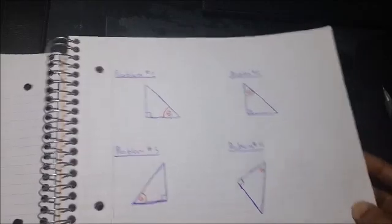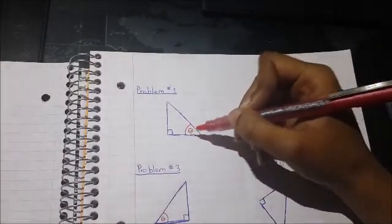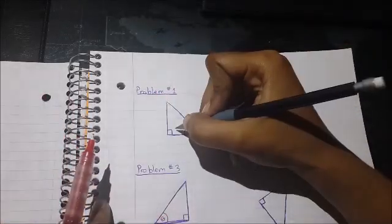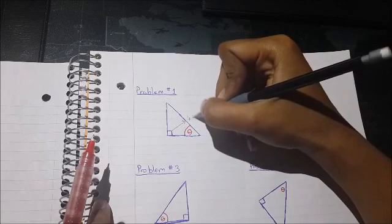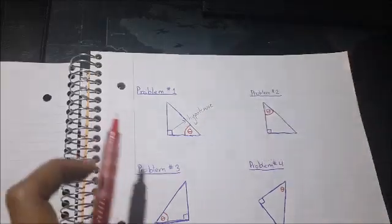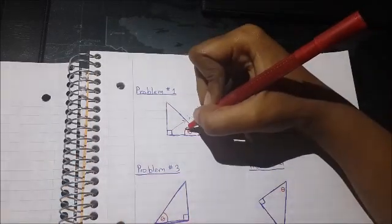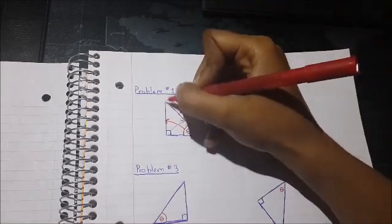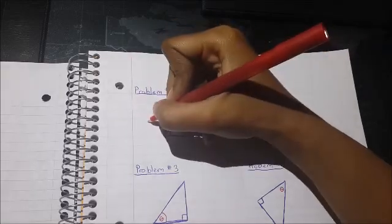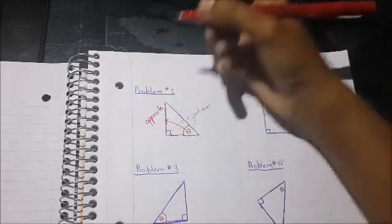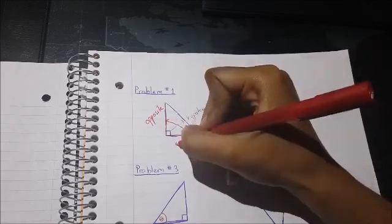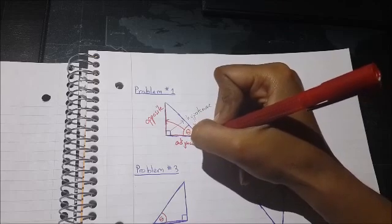So if we're looking at the first problem, here our angle, our theta, is in this position, right? So again, we know opposite of our right angle is the hypotenuse, always. And if we draw our arrow from here, from this angle theta to this side, this is our opposite side. And we know any side touching the theta, that's not the hypotenuse, must be the adjacent side. Okay, and that was it for problem one.